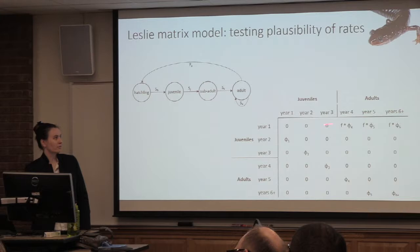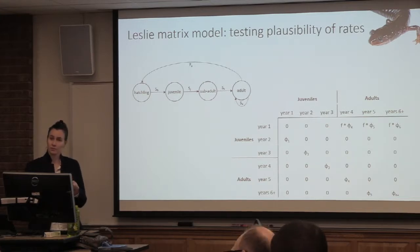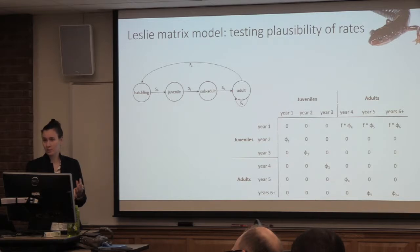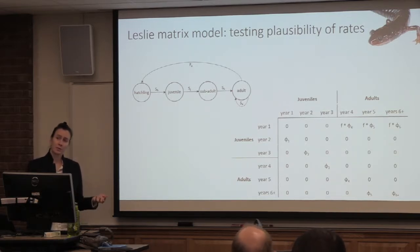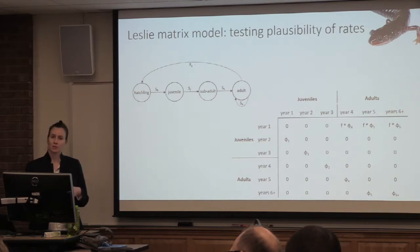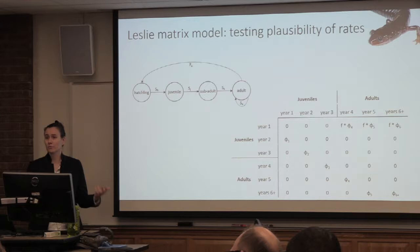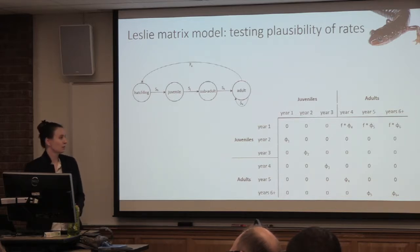The fecundity value F is clutch size times clutch frequency times hatch rate times offspring sex ratio, which we assume to be 0.5 because these animals are heterogametic — meaning unlike turtles, the number of males and females in the clutch is not determined by temperature or some other environmental factor. It's genetically determined.